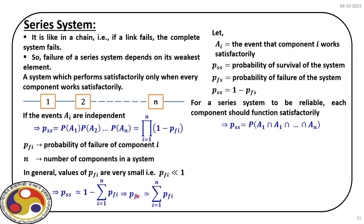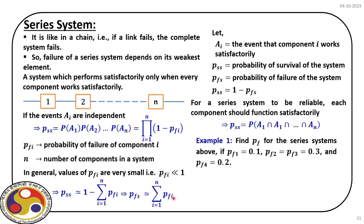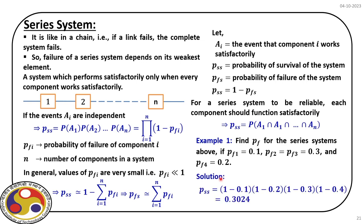Taking a series system example with four subsystems, each with given probability of failure, P_SS is the product of (1 − pf_i) for each component. The result is P_SS = 0.3024, which is the probability of survival — the reliability of the system. So one minus that gives the probability of failure of the series system.